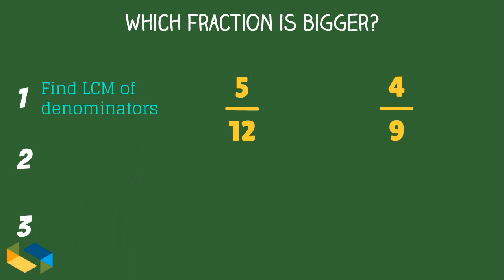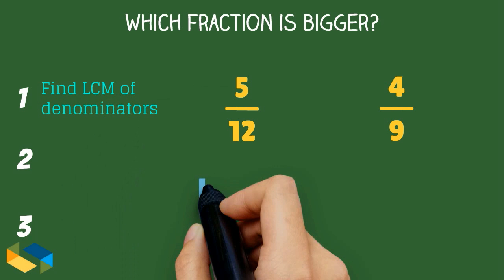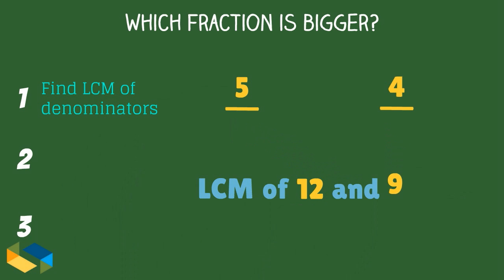First, we find the LCM of the denominators 9 and 12. This is 36.